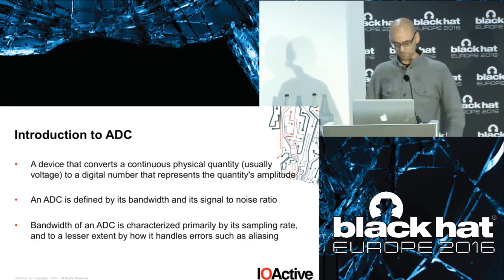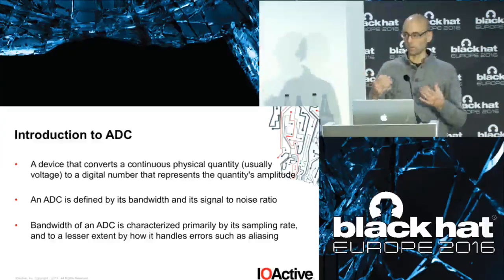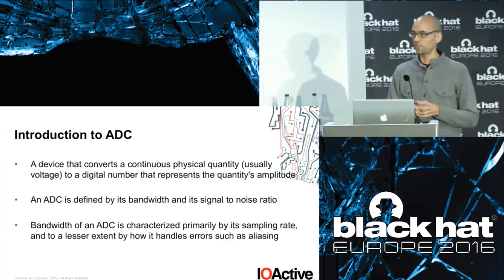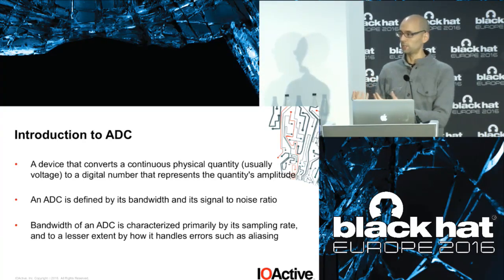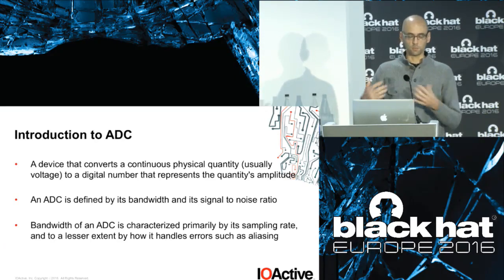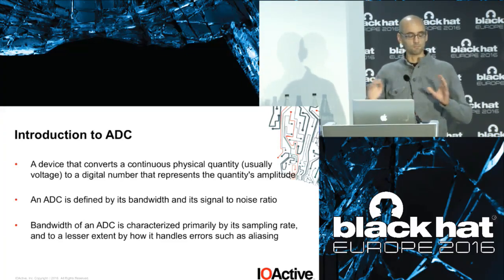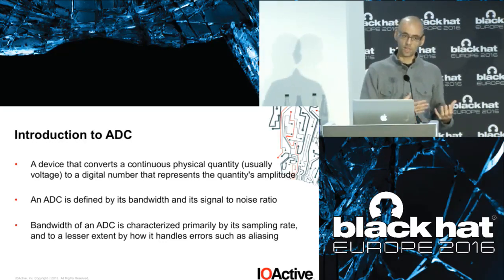An ADC is the component that helps the digital system interact with the analog world. Basically, it's a system where you can read signals. It helps you translate what the actual voltage or measurements are — for example, reading the temperature, current, or voltage. This system helps you translate the actual signal into values that can be used in a digital system, translating into a floating point number you can operate with digitally. ADCs are characterized by different parameters: bandwidth is how much frequency they can read, signal-to-noise ratio is also important, as is sampling rate.